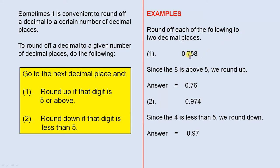So the first one is 0.758. Now we want to round off to two decimal places. That means we have to have two digits after the decimal point. The rule says go to the next decimal place, so we go to the 8, because that's the next one, and it says round up if that digit is 5 or above. So because it is 8, we increase the 5 by 1.